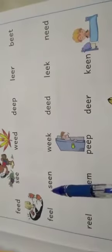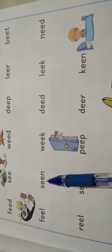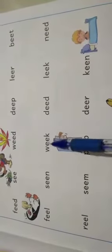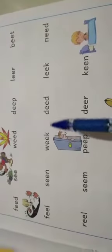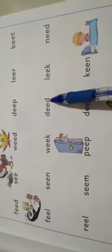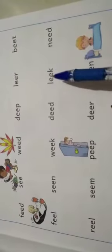Next word — S-double-e-n: seen. W-double-e-k: weak. Then D-double-e-d: deed. L-double-e-k: leak. N-double-e-d: need.